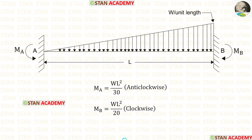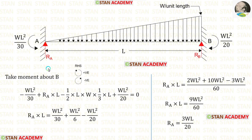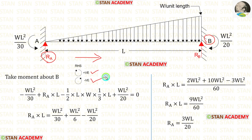In this analysis we have found the fixed end moments MA and MB. MA acts in the anti-clockwise direction and MB acts in the clockwise direction. Now we are going to find out the vertical reactions, starting with RA.